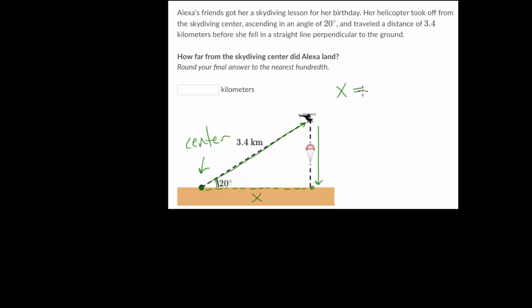So let's define it. That x is the distance between the skydiving center and where she landed. And once you define your variable, then you can set up your trigonometric ratio. So let's use our SOHCAHTOA again, so that we have all of our trig definitions.